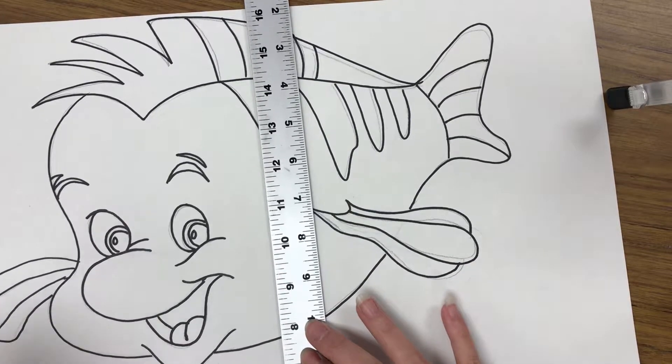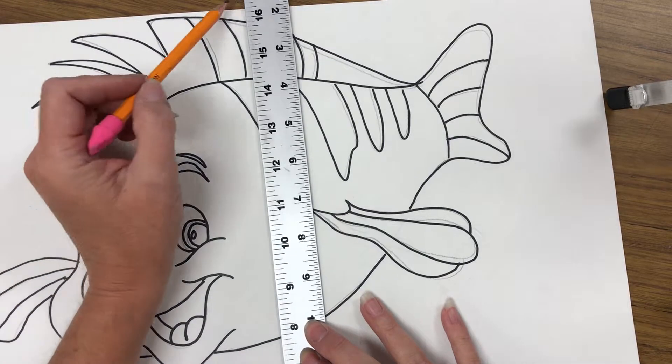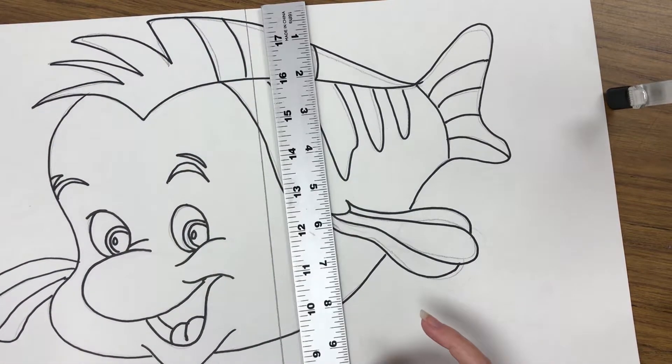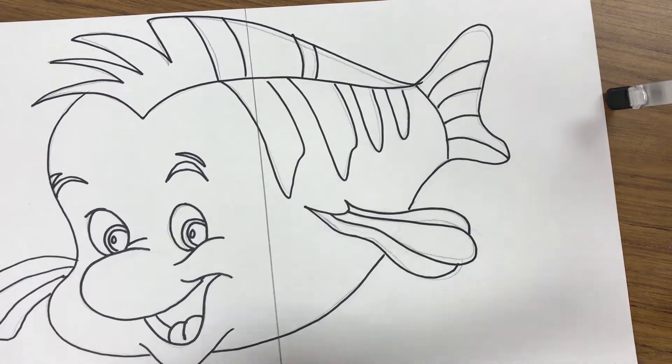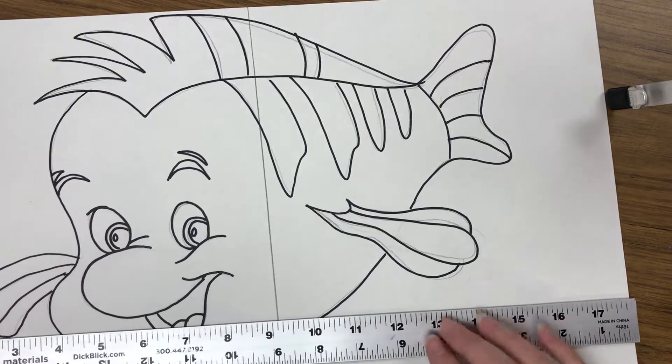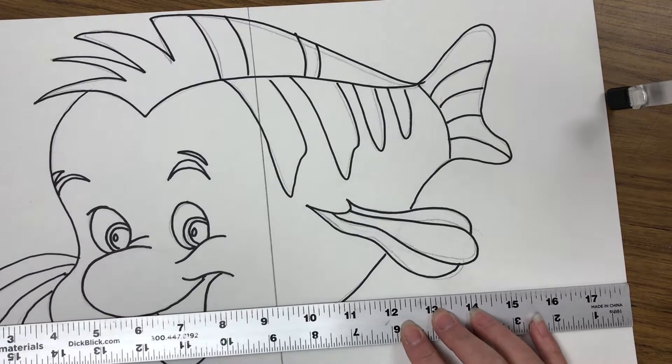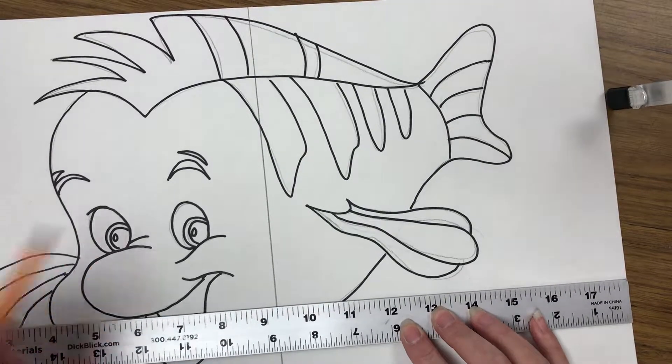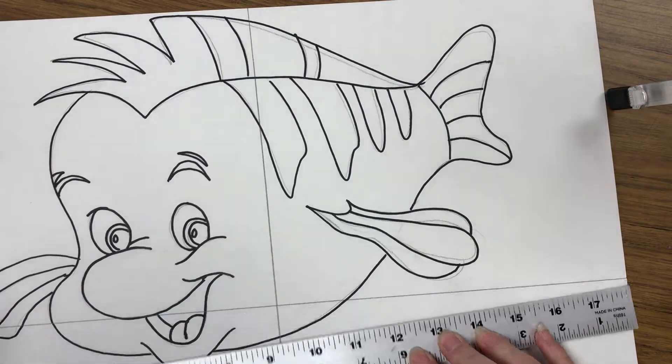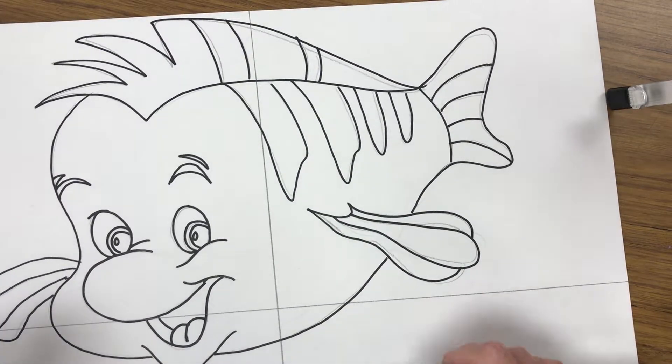The easiest way to start this is to line your ruler up somewhere towards the middle of your paper and draw a line straight through from top to bottom. Then turn your ruler and somewhere maybe towards the bottom, go ahead and draw a line that goes all the way side to side. Now, these are the only two lines in your whole picture that are going to go all the way from one side to the next.